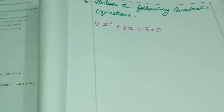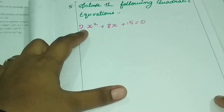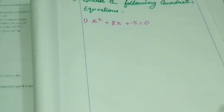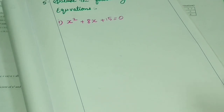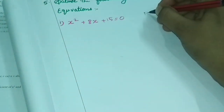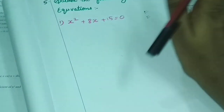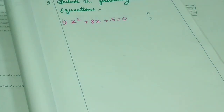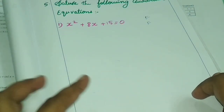We will solve the quadratic equations. The first one is x squared plus 8x plus 15 is equal to 0. This is the quadratic equation. We will use two methods: factorization method and formula method. Factorization method is easy to follow.